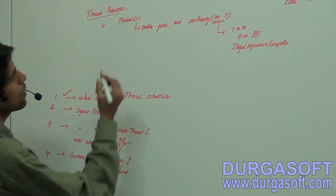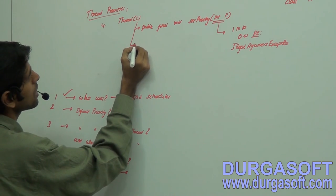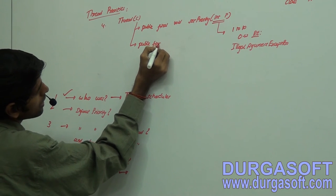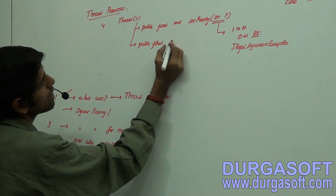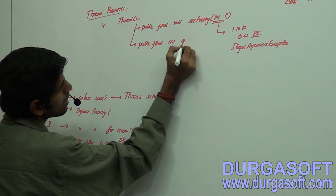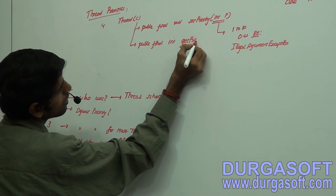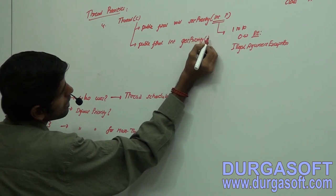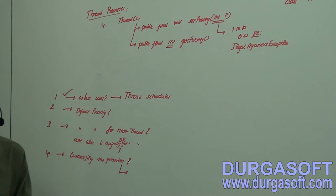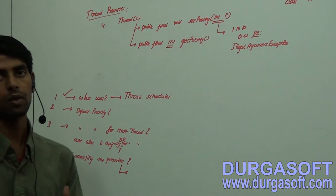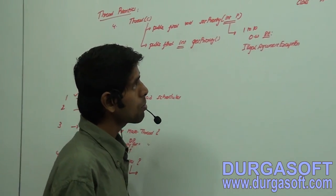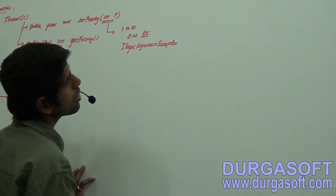The second method is used to get the priority of a particular thread. Its return type is int and the method is getPriority(). It returns the priority currently associated with that thread. Now let us write a small piece of code.